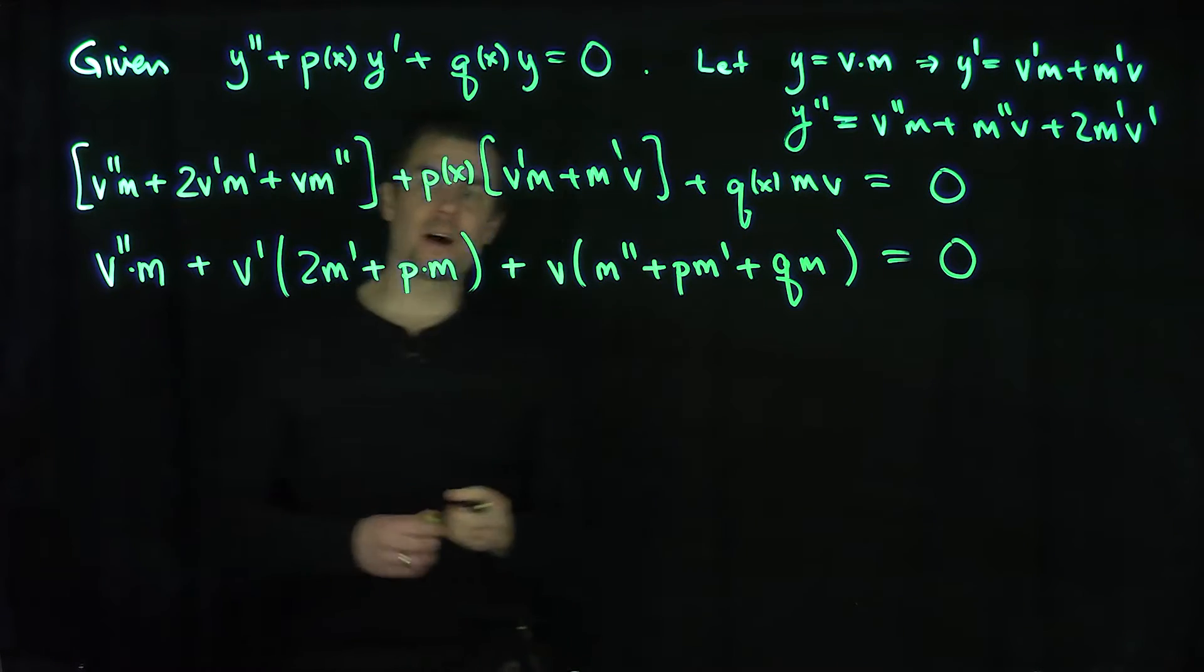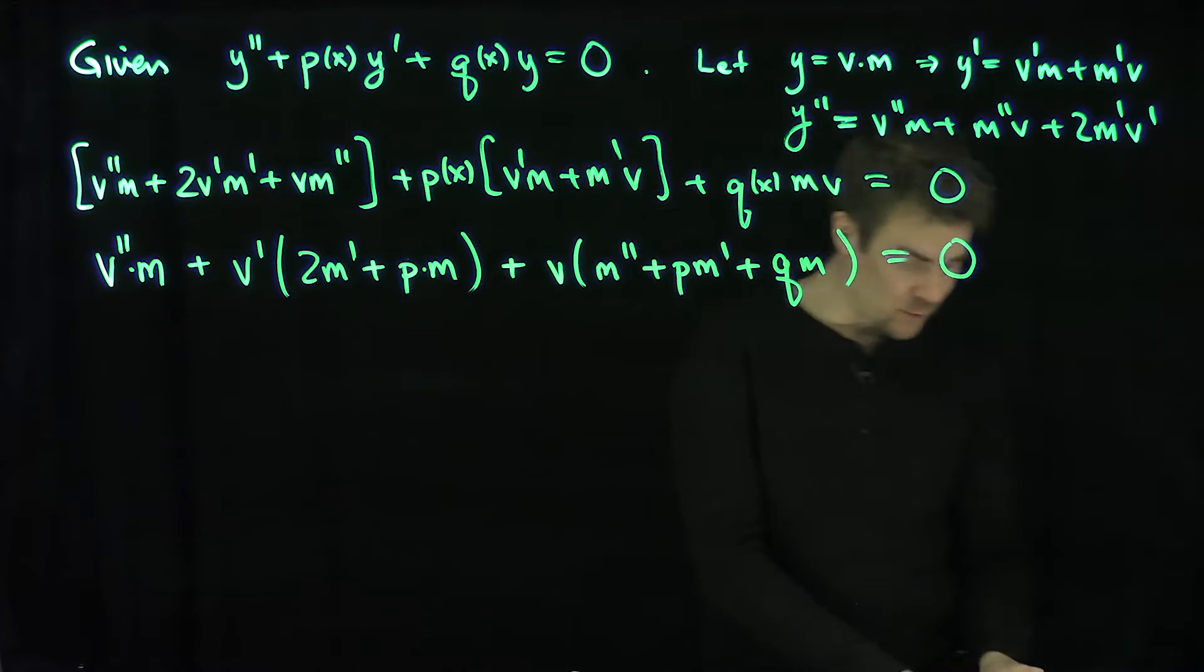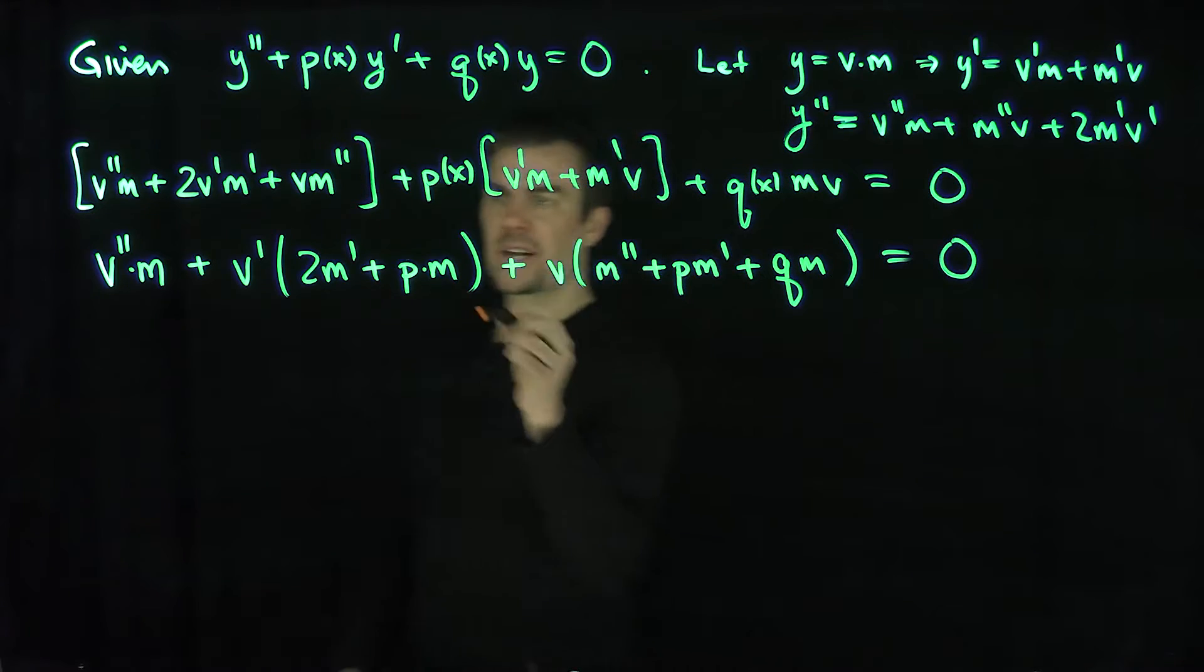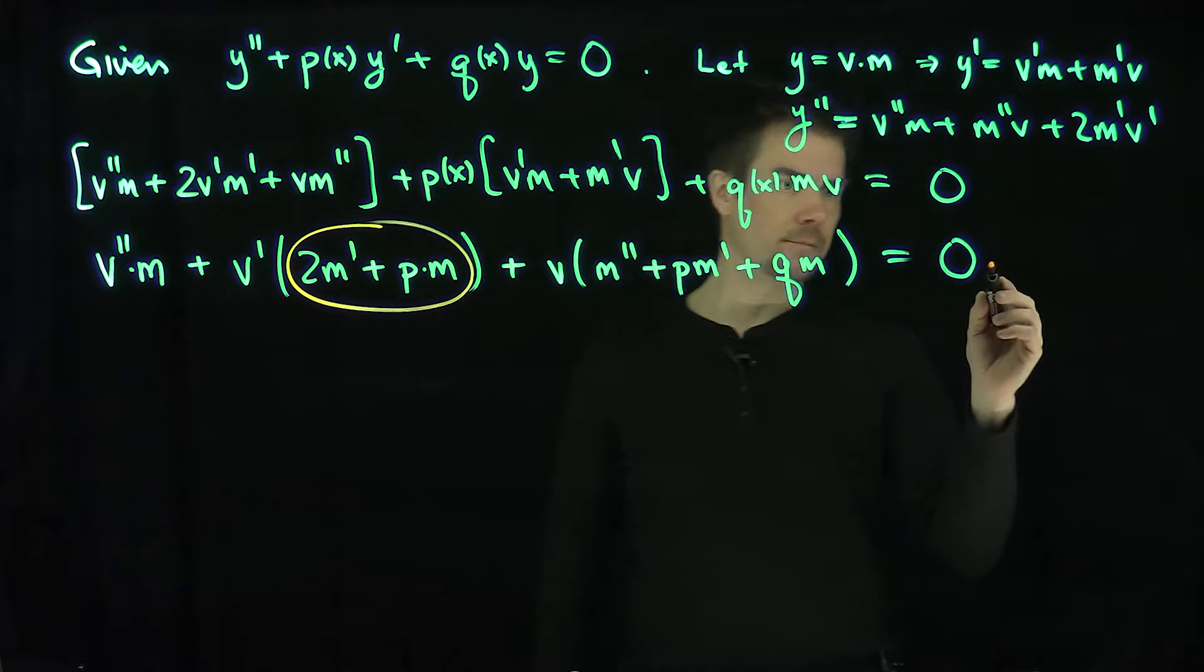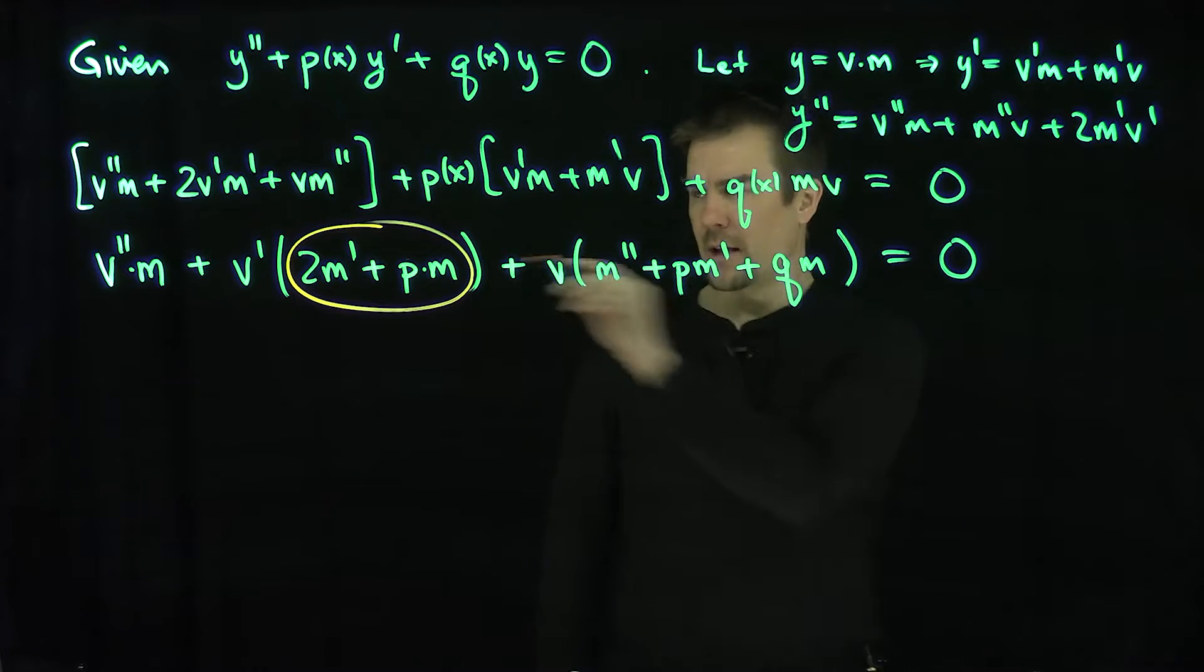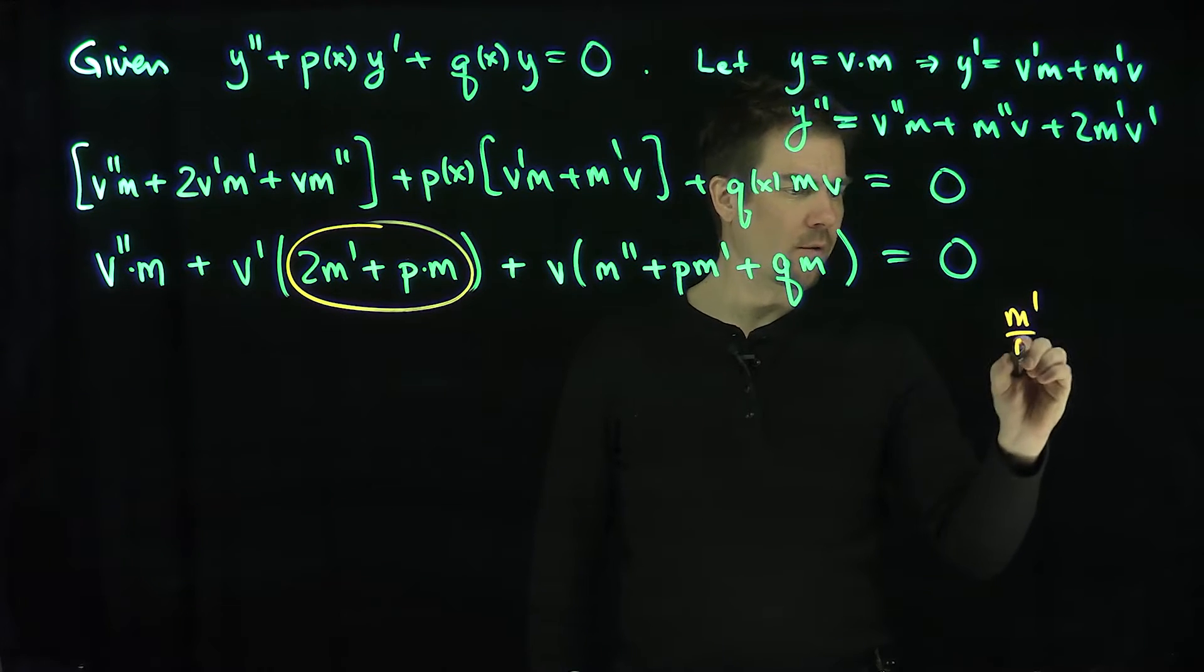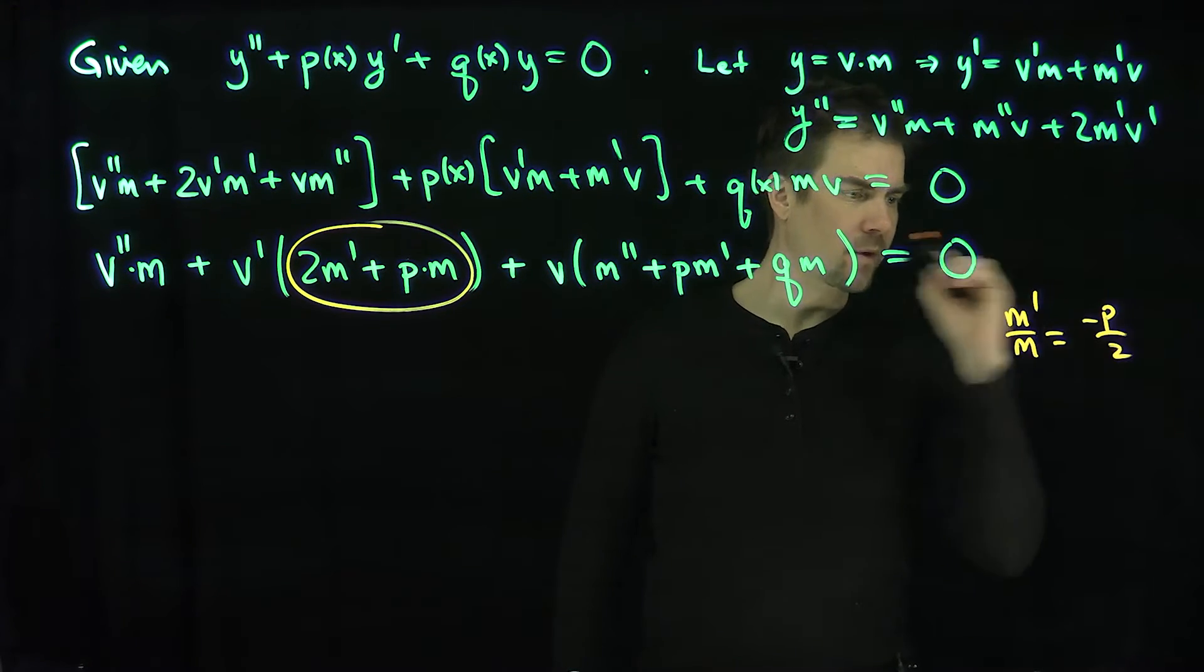And now I'd like to eliminate the first derivative term. That's what the normal form does. So the normal form takes this relationship over here and makes it 0. So the normal form is going to have, if I set that equal to 0, we're going to have m prime over m is equal to negative p over 2 by doing that.